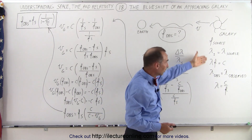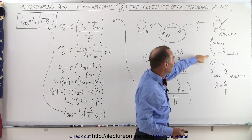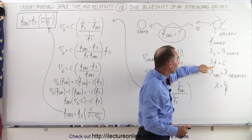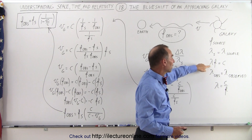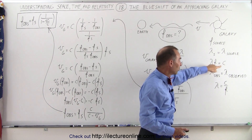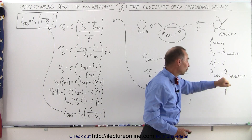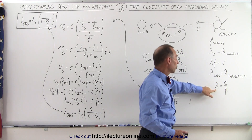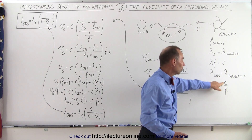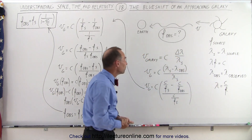Notice I have a table here that shows you the wavelength of the source. This is the equation where the wavelength times the frequency equals the speed of light. OBS stands for observed, and therefore we can also write the wavelength as being equal to the speed of light divided by the frequency.